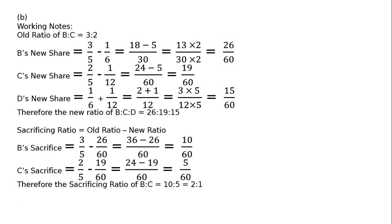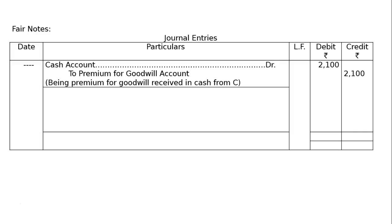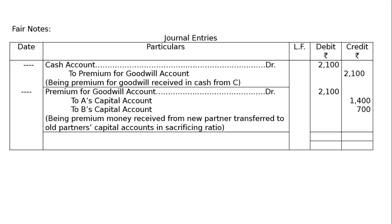Goodwill premium will be distributed in the sacrificing ratio. Journal entries: cash account debited to premium for goodwill account, rupees 2100 in both debit and credit columns, being premium for goodwill received in cash from D. Next: premium for goodwill account debited rupees 2100, to B's capital account rupees 1400, to C's capital account rupees 700, being premium money received from new partner transferred to old partners' capital accounts in sacrificing ratio. Debit and credit columns totaled at rupees 4200 each.